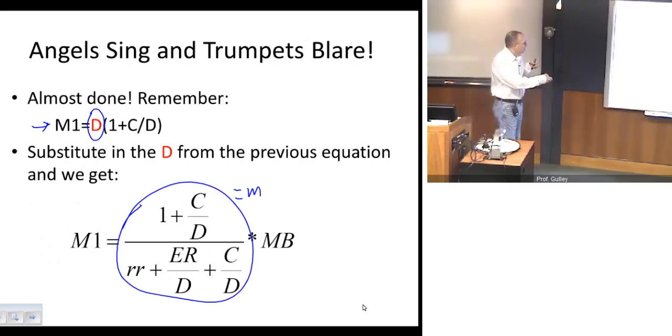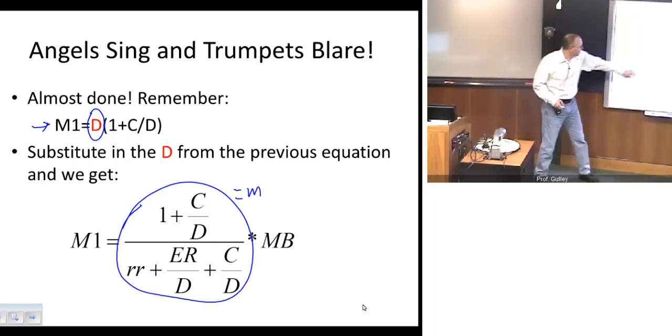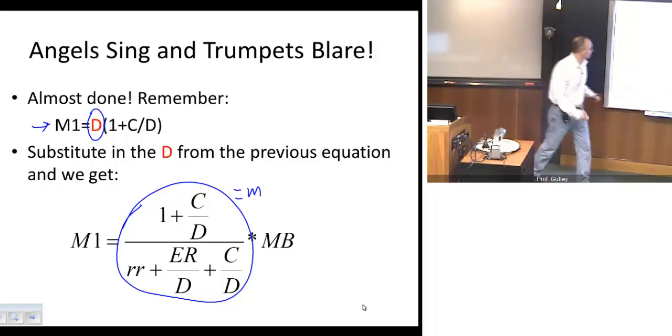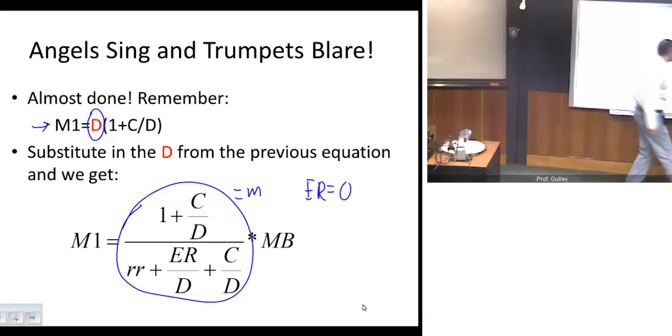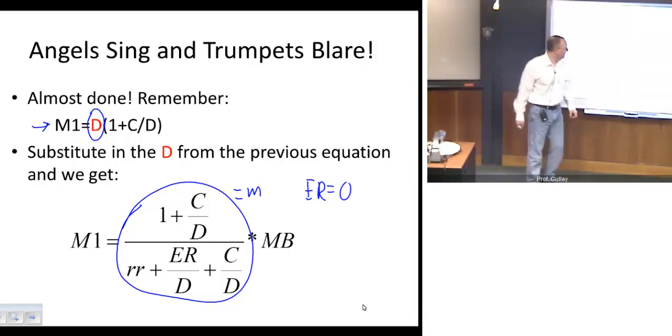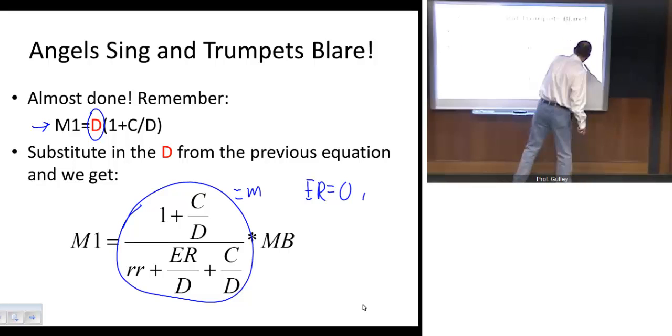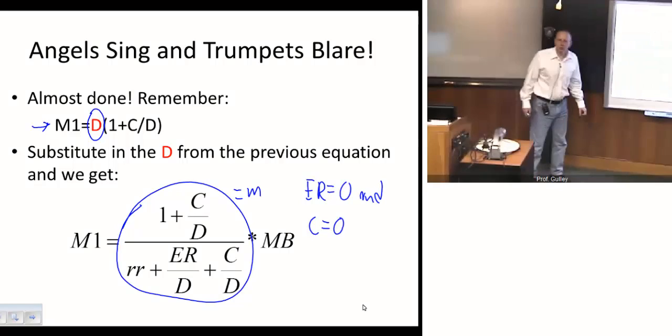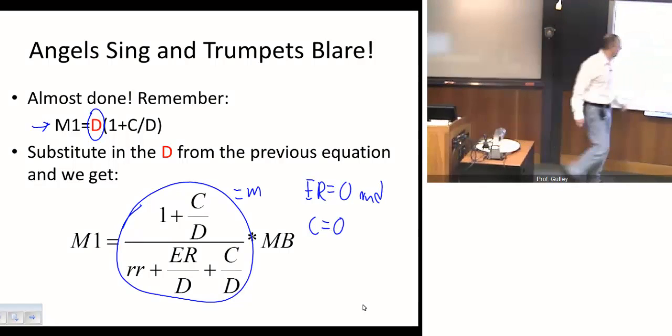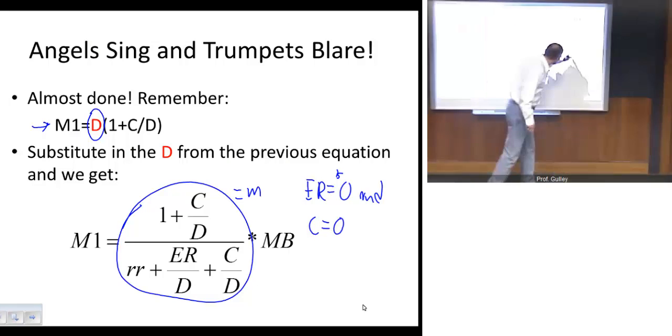Suppose, let's go back to this equation right here. So we have this money multiplier equation, this little m. What happens if we decide, or if banks decide to hold no excess reserves, in other words, only the required legal minimum, and households decide to hold no currency?